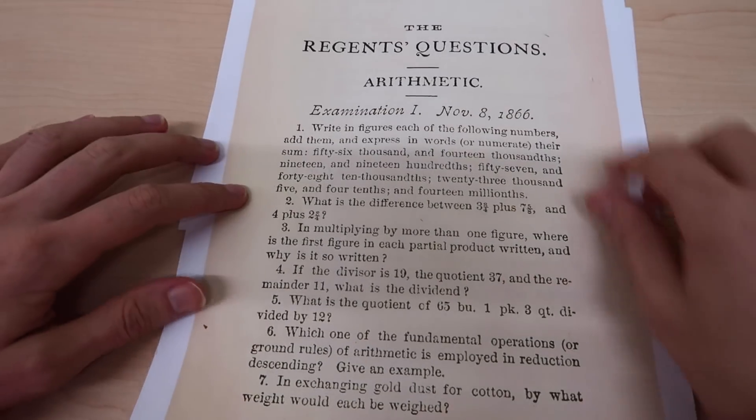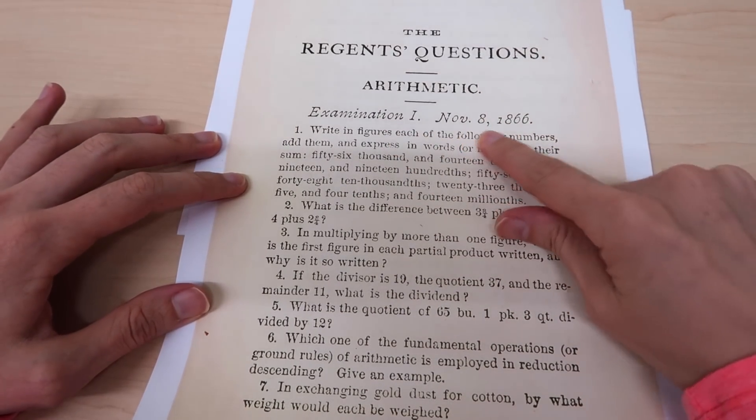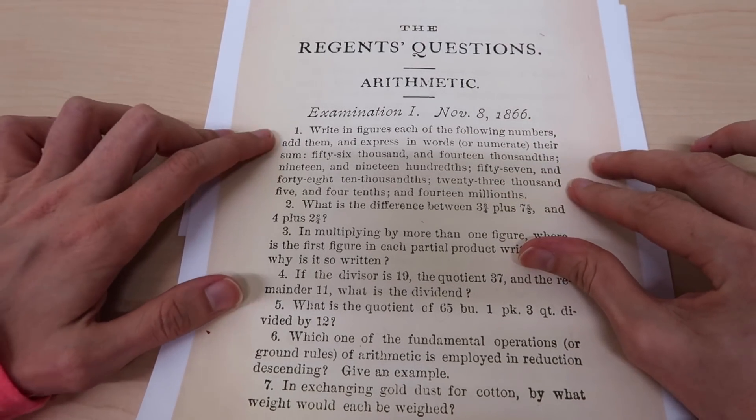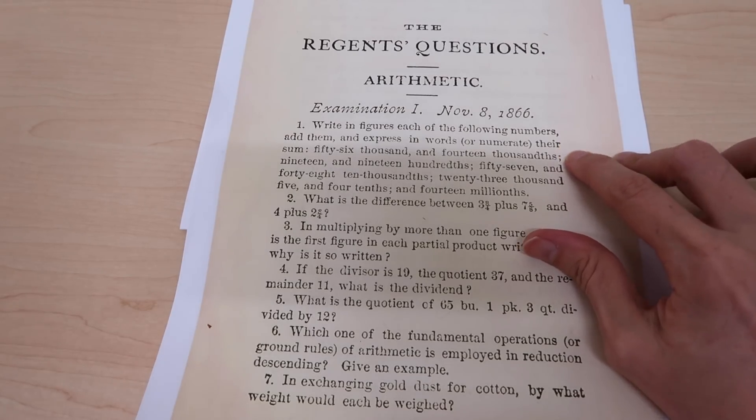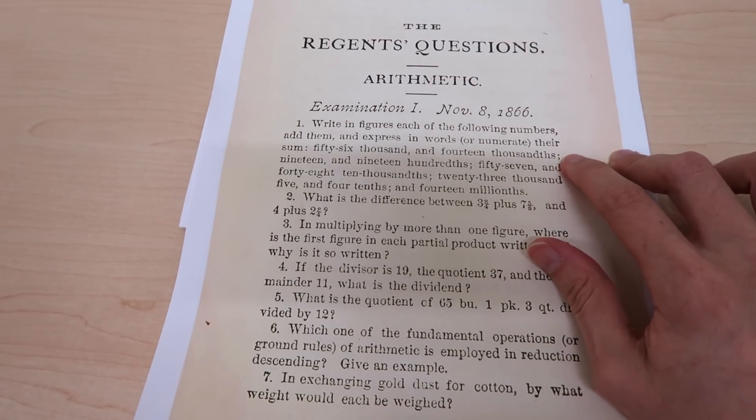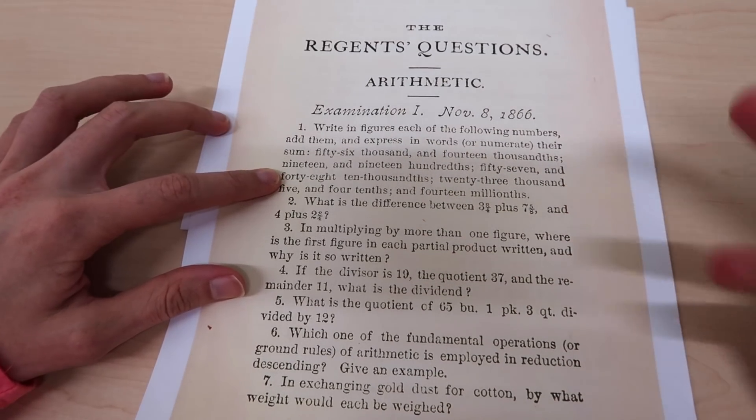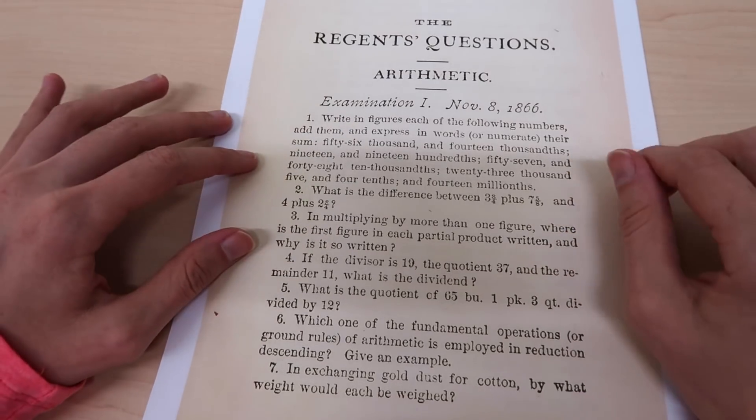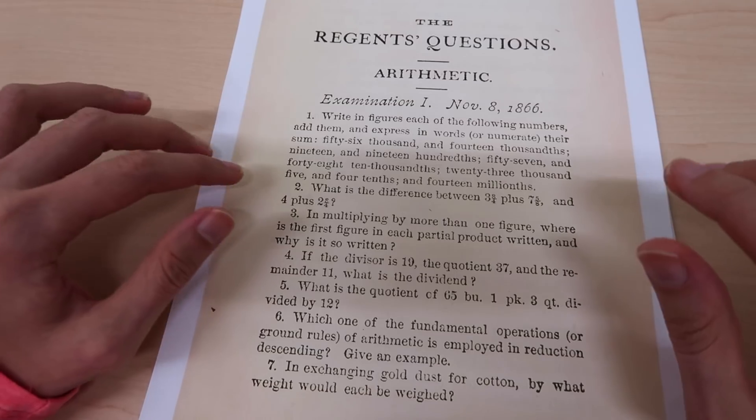So here is page one: we have the Regents Questions Arithmetic Examination 1, November 8th 1866. Let's go through the problems. Number one: write in figures each of the following numbers, add them and express in words their sum. So we've got some numbers written down in words. It would seem kind of easy to just write them down in digits, but this is an 1866 exam after all so it's a little bit trickier than that.